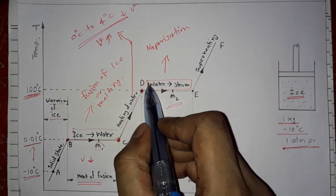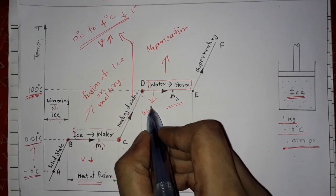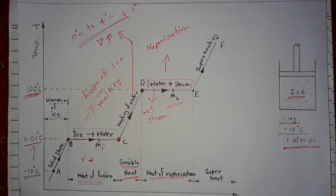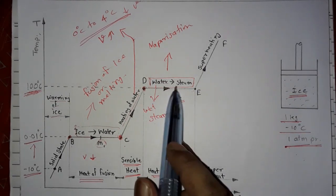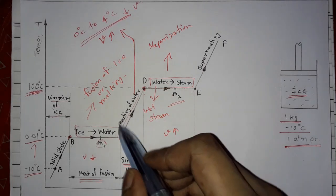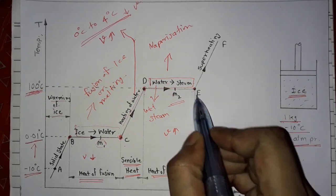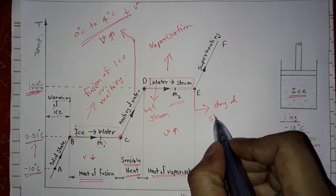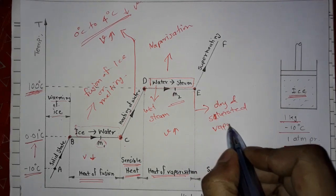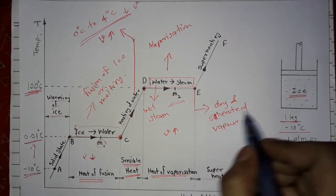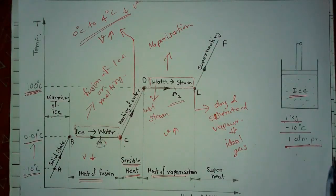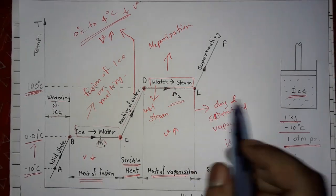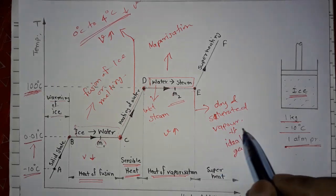This water-steam mixture is called wet steam, because the steam contains water particles in it. The specific volume during this process is considerably larger than that of saturated water. At point E, we get dry and saturated vapor. This dry and saturated vapor is also called an ideal gas, because at this point the gas behaves as an ideal gas.